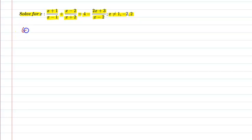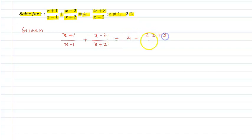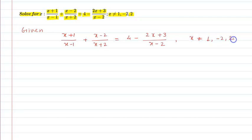Let us see the given information in this question. We have the equation, and we need to find the value of x: x plus 1 upon x minus 1, plus x minus 2 upon x plus 2, is equal to 4 minus 2x plus 3 upon x minus 2, where x is not equal to 1, minus 2, and 2.